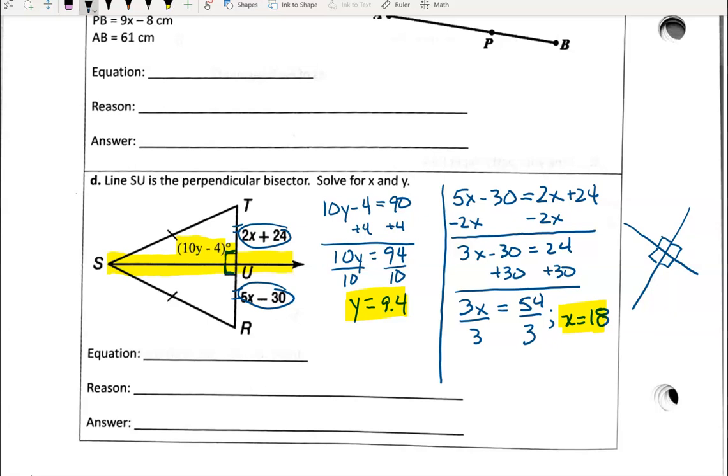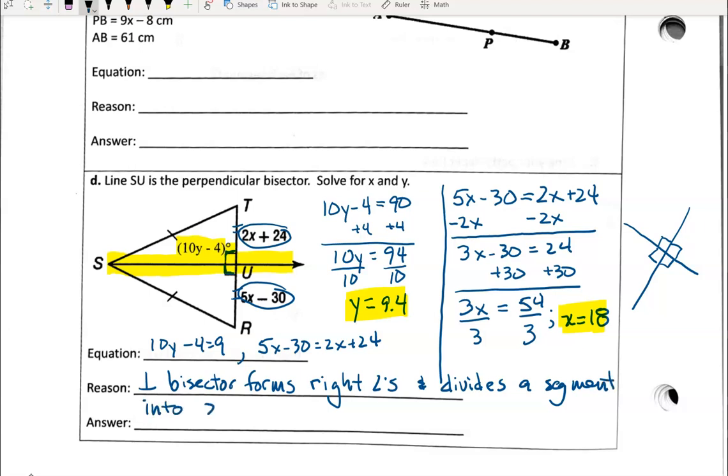They're looking for the equations. One equation is 10Y minus 4 is equal to 90, and the other one is 5X minus 30 is equal to 2X plus 24. The reason is that perpendicular bisector forms right angles and divides a segment into two congruent segments. I've highlighted our answers over there.